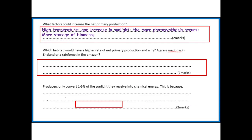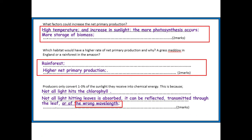Here come the answers. A high temperature and an increase in sunlight leads to more photosynthesis and therefore more storage of biomass, increasing the net rate of primary production. For this question, the answer would be the rainforest in the Amazon because it has higher temperature and increased sunlight, therefore more photosynthesis, more storage of biomass, and therefore higher net primary production.